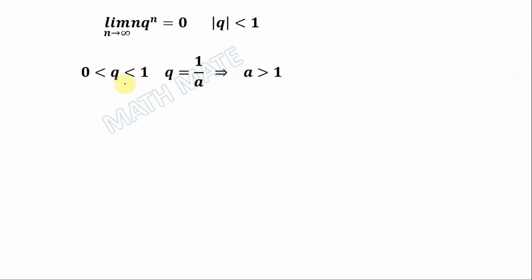We can define q as 1 over a, and in that case a is more than 1. So our multiplication equals n over a to the power of n. And in our previous videos we